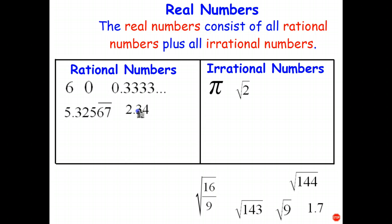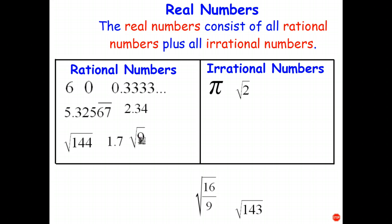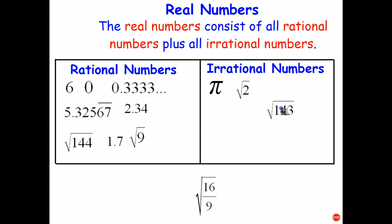Terminating decimals are rational numbers. Square root of 144: well, 144 is a perfect square because it's the square of 12, so that's an example of a rational number. There's another terminating decimal — rational. Square root of 9 is equal to exactly 3, so that's a rational number. Square root of 143: there's no number squared that gives you 143, so that's an example of an irrational number.